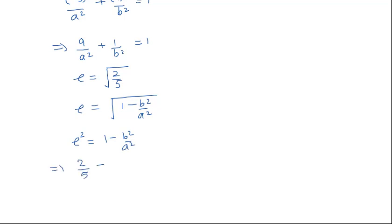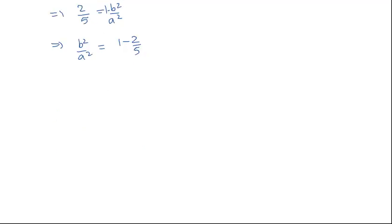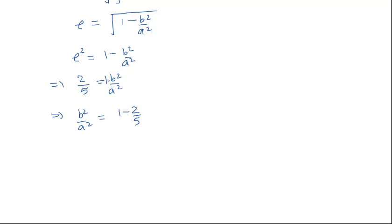From the eccentricity condition, 2/5 = 1 - b²/a², which gives b²/a² = 1 - 2/5 = 3/5. Therefore b² = (3/5)a².